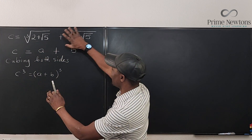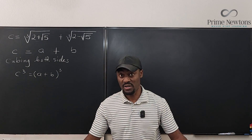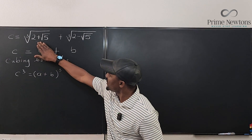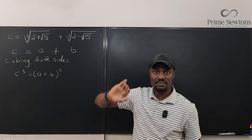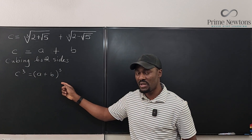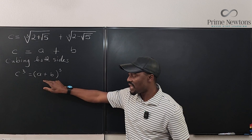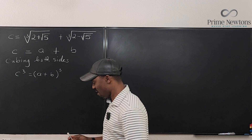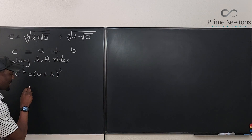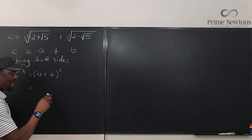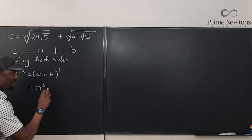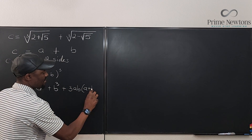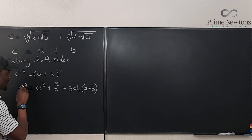(A plus B) cubed means multiplying it by itself three times — that's hard to expand directly. Instead, we use the cubic binomial expansion. Rather than Pascal's triangle, the easier formula tells us that (A plus B) cubed equals A cubed plus B cubed plus 3AB times (A plus B). So C cubed equals A cubed plus B cubed plus 3AB(A plus B).